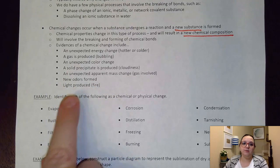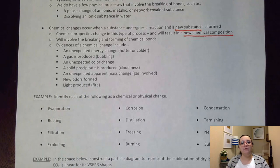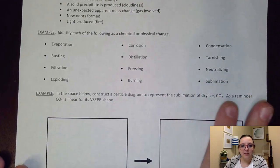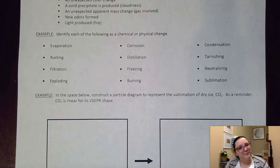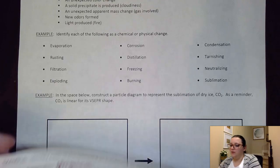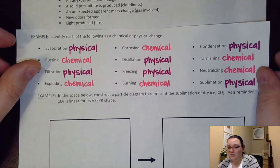New odors being formed could also indicate a chemical change. And then, finally, light being produced. Like if I'm burning something where I have a fire that's been produced, that would be an indication of a chemical change. So here's what I want y'all to do. There's a lovely list here of a combination of chemical and physical changes. And what I want you to do is to take a moment and pause the video and see if you can identify these as being a chemical or physical change. Okay, so did you pause that video? Did you go make a guess on those? I'm going to hope that you did. I'm going to go ahead and put my answers on here and you can see how you compared to mine.